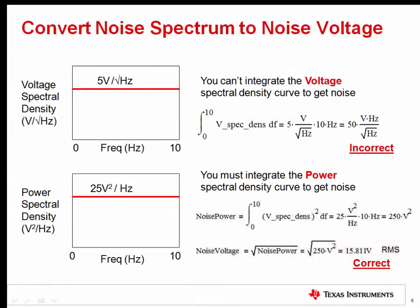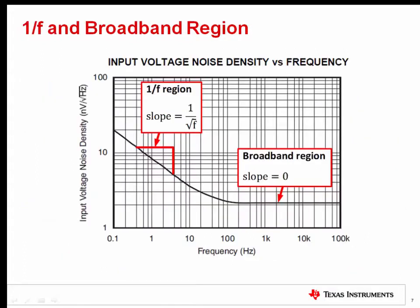Now that we understand how to properly integrate a spectral density curve, let's consider the different regions of noise. The spectral density curve has two distinct regions, the 1 divided by F region and the broadband region. In the previous presentation, we looked at 1 over F and broadband noise in the time domain. 1 over F noise occurs at low frequency and has a slope of 1 divided by the square root of frequency for both voltage and current spectral density. Remember that power spectral density is voltage spectral density squared. So for power spectral density, the slope of 1 over F noise is equal to 1 divided by the square root of frequency. This is where it gets the name 1 over F. Broadband or white noise has a flat spectral density.